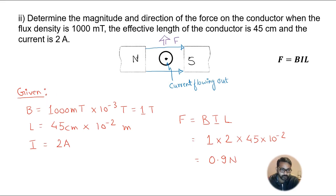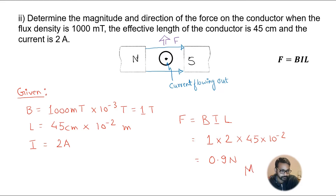The flux density B was given as 1000 millitesla, which converts to 1 tesla by multiplying by 10 to the power minus 3. The length was 45 centimeters, which we convert to meters. The current is 2 amperes. After unit conversion, multiplying all values together gives 0.9 newtons — that is the magnitude of the force.